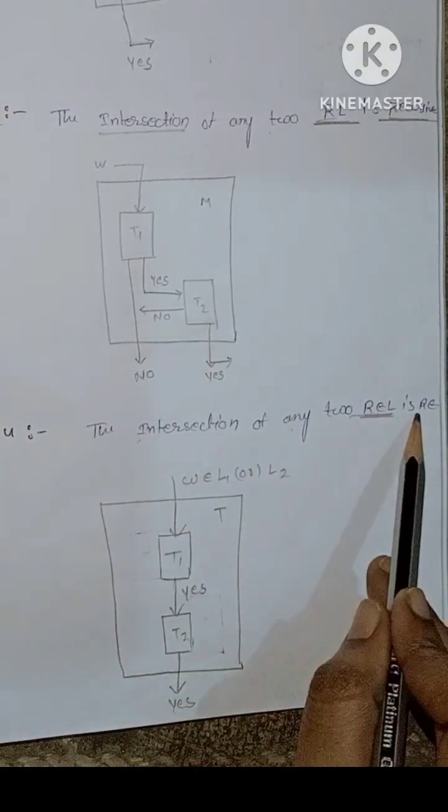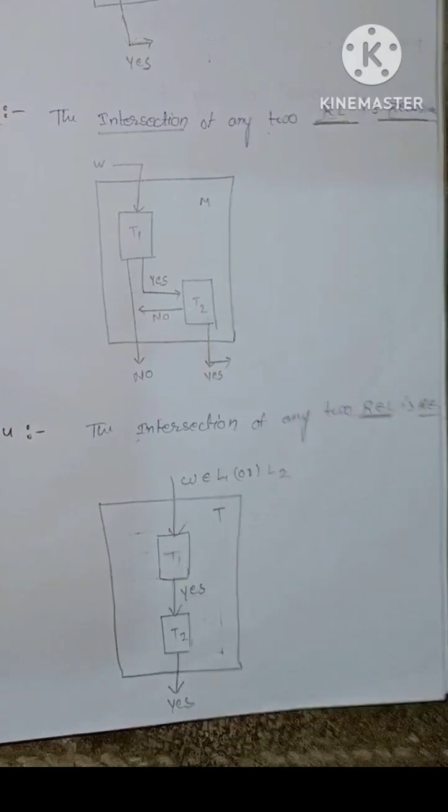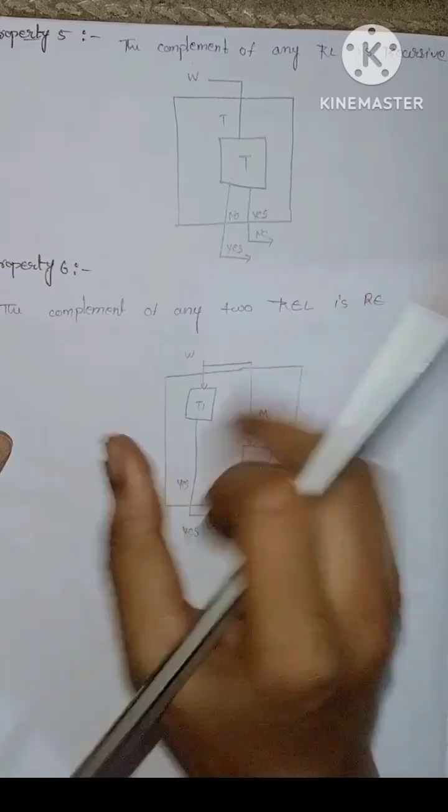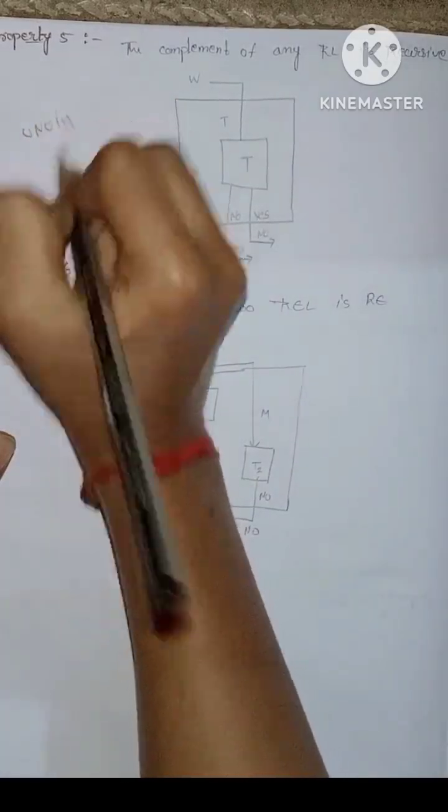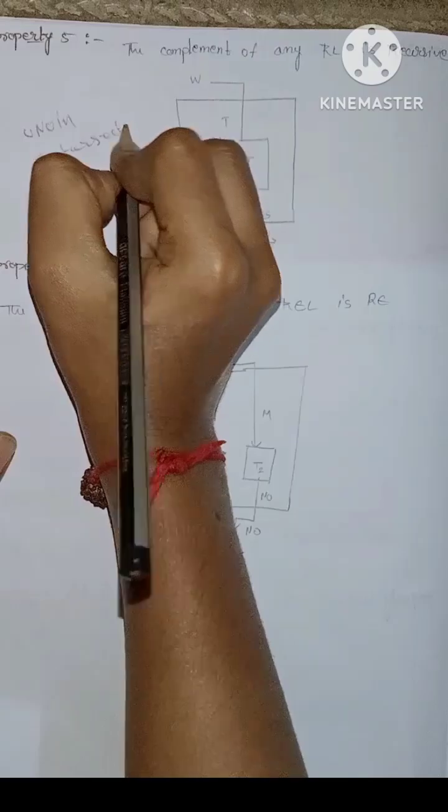Next property is complement. First one is union, second one is intersection, third one is complement.